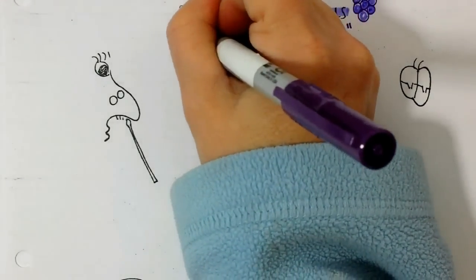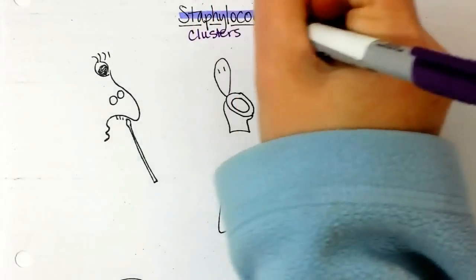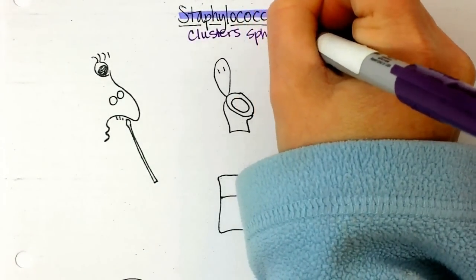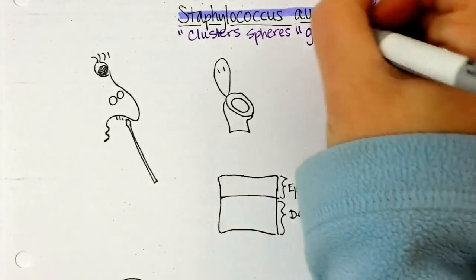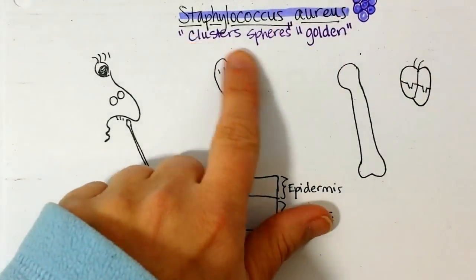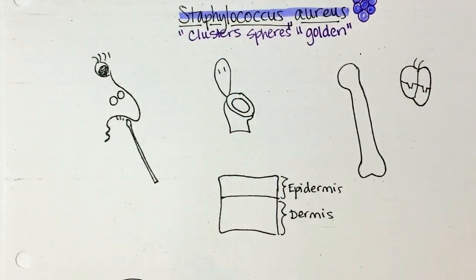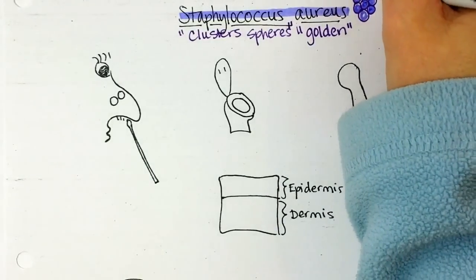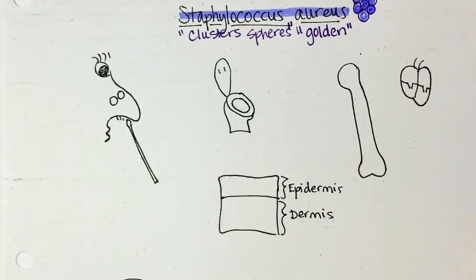And literally its name means clusters of spheres. If only all bacteria were named so logically, right? So clusters of spheres that are golden in color. Gram-positive organism.